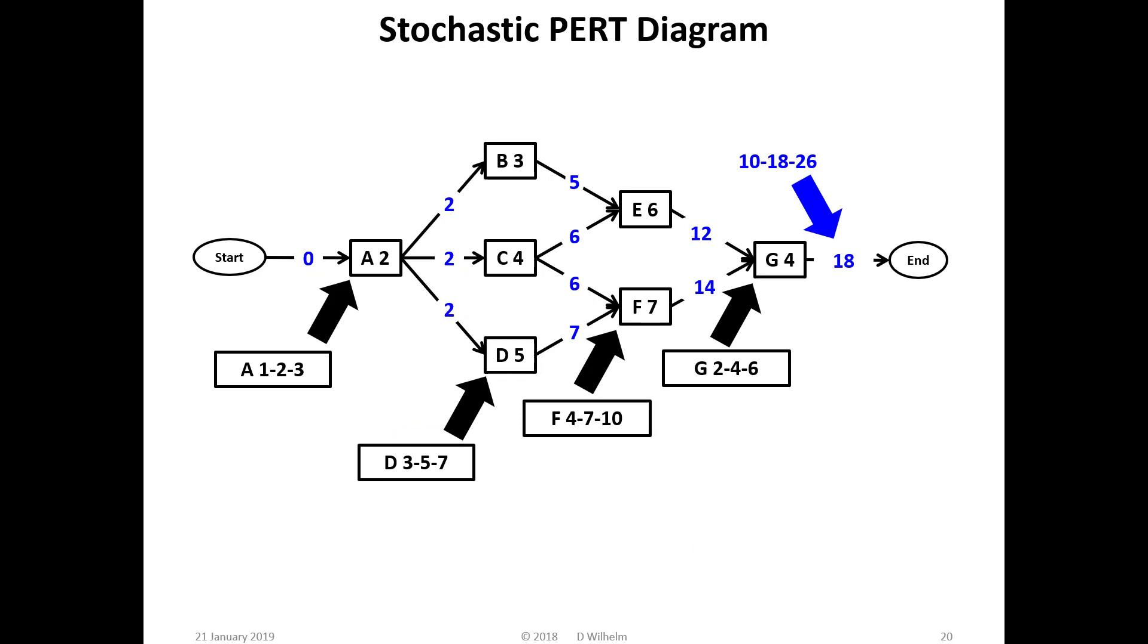We've treated the task execution times as deterministic. There is often some uncertainty how long a task will take. This stochastic PERT diagram shows the individual uncertainties and the resulting uncertainty in the project cumulative elapsed time. Instead of task A assigned as 2 days, optimistic time is 1 day, expected time is 2 days, and pessimistic time is 3 days. Similarly for the other task execution times. By the time we get to the project cumulative elapsed time, instead of 18 days, it's between 10 and 26 days. As a project proceeds, we can get feedback from the Gantt chart and convert some of the early stochastic times to deterministic times.